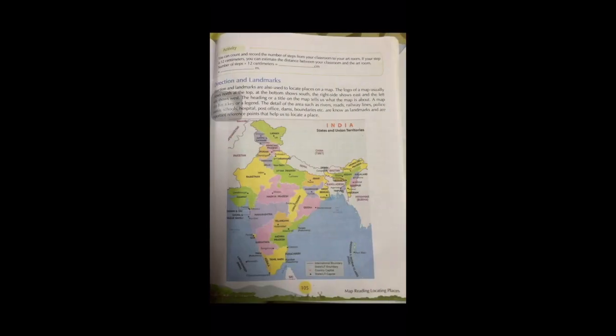You cannot use the normal exact length of distances between places. You have to reduce them to make it in a smaller scale. So how is it done?